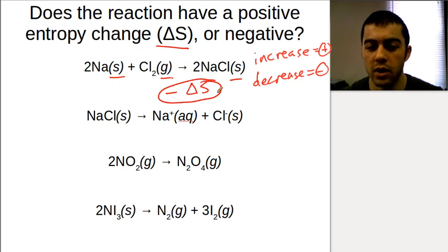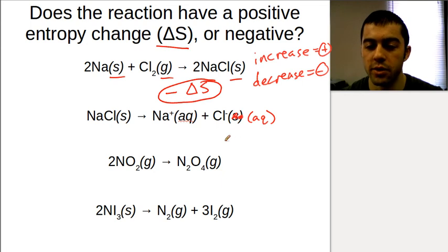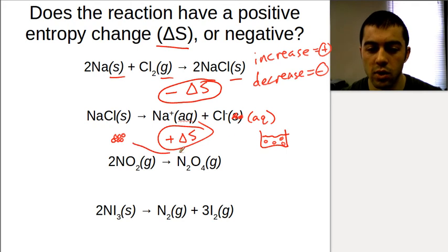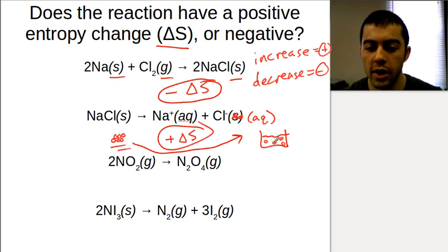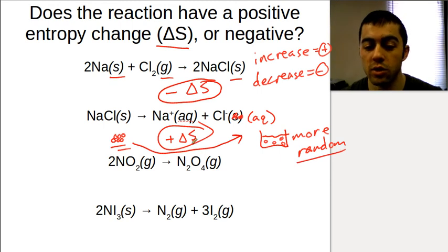We can look at the phases and see what happens as we go from reactants to products. For the second example, sodium chloride as a solid going to sodium ions and chloride ions in aqueous solution: in aqueous solution, the ions are dispersed in the solvent. This would be an increase in entropy because we're going from a solid with a rigidly arranged structure and dispersing all those solid particles into the solution. A solution is more disordered than a plain solid — we're scattering the particles into the solution, which is more random. More randomness and disorder means an increase in entropy.